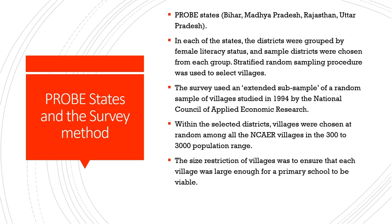The survey followed a stratified random sampling procedure for selection of villages. It used a subsample already available from the National Council of Applied Economic Research (NCAER), which had carried out village studies in 1994 — just before the 1996 survey. The probe team took reference from those NCAER village studies and extended that subsample further. Within selected districts, villages were chosen randomly among all NCAER villages in the 300 to 3,000 population range.